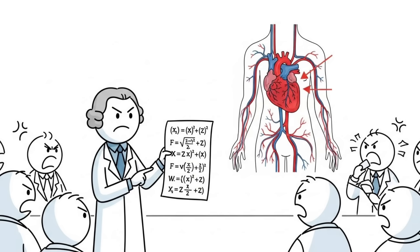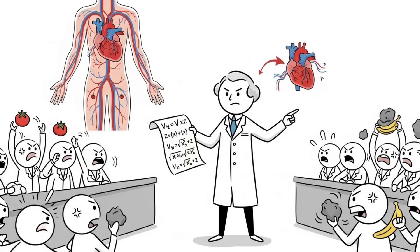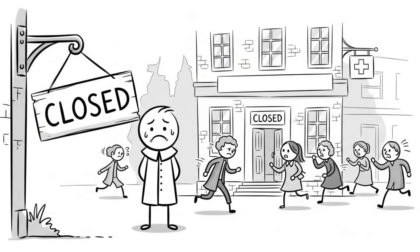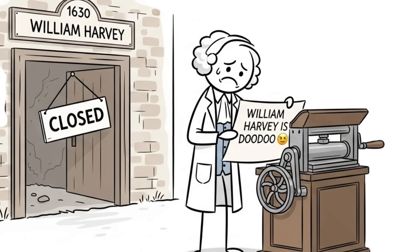Doctors were outraged. They called him circulator, a 17th century insult meaning quack. His medical practice collapsed because patients were terrified of a doctor with such bizarre ideas. Colleagues published pamphlets attacking him.